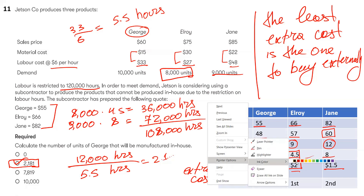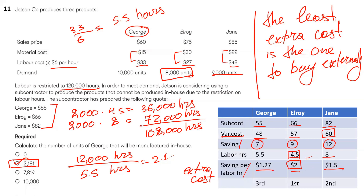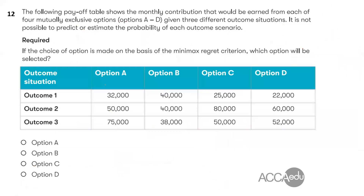Let me change the color to blue. We're producing 2,181 in-house, and the remaining demand we buy externally from the subcontractor. For the next question, it's a payoff table — which option is selected on the minimax regret criterion? That means minimizing the maximum regret.